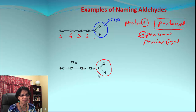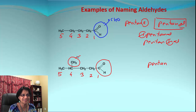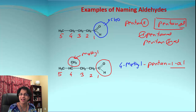For the next example, numbering starts from the aldehyde carbon. Whichever direction we go, we get the same chain length, so we go in a straight line — that's five carbons, giving pentanal. But we also have a substituent: a methyl group on carbon number four. So we write 4-methylpentanal.